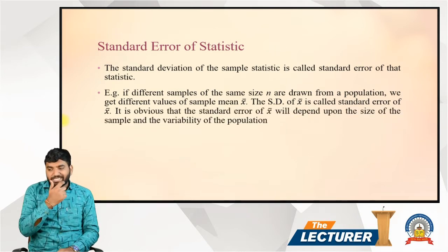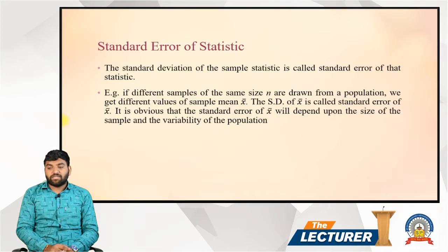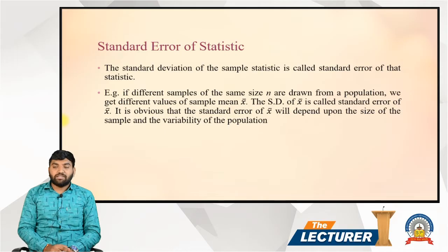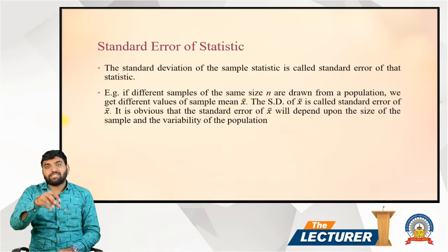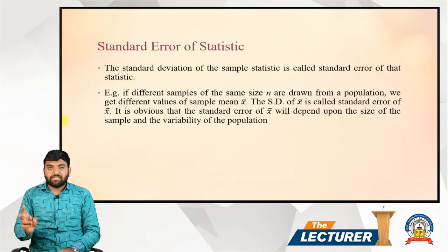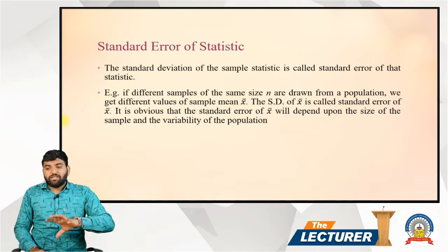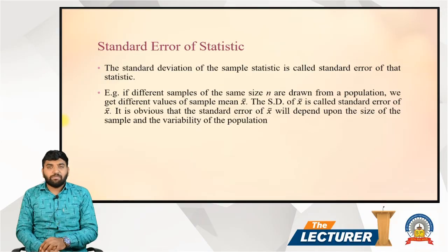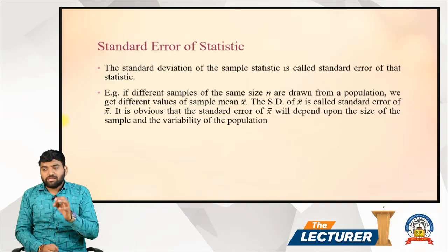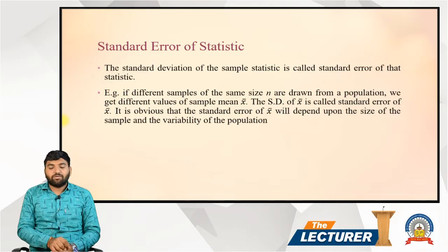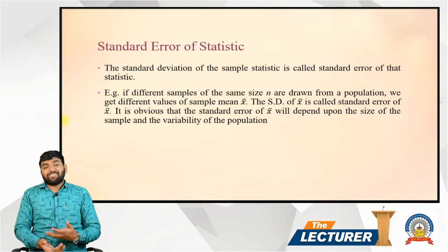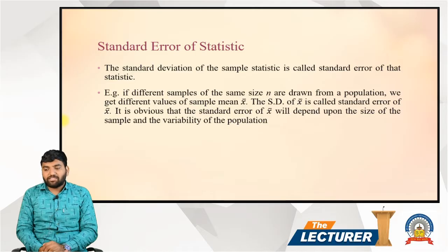The standard deviation of a sample statistic is called the standard error of that statistic. For example, if different samples of sample size n are drawn from a population, we get different values of the sample mean x-bar. The standard deviation of x-bar is called the standard error of x-bar. It is obvious that the standard error of x-bar will depend upon the size of the sample.